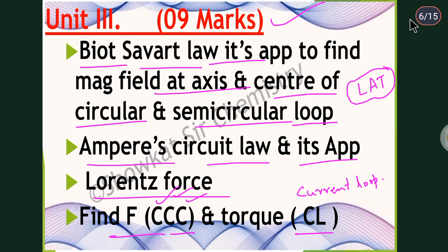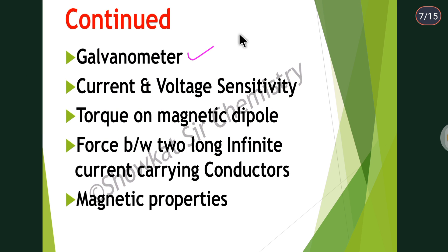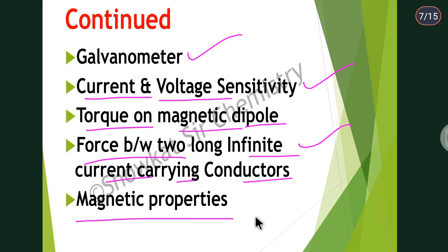Also in Unit 3: the galvanometer — its structure, working, and functioning, including current and voltage sensitivity. Then torque on a magnetic dipole and the force between two long infinite current-carrying conductors. Finally, magnetic properties: paramagnetism, diamagnetism, and ferromagnetism — remember the examples and properties of each type of substance.